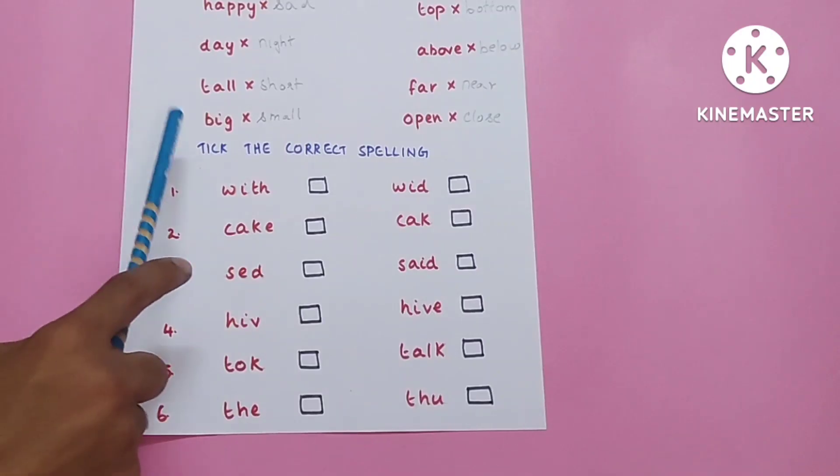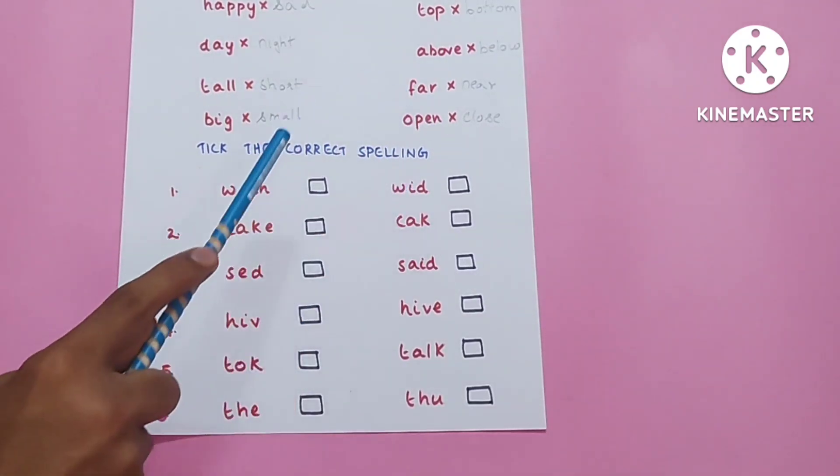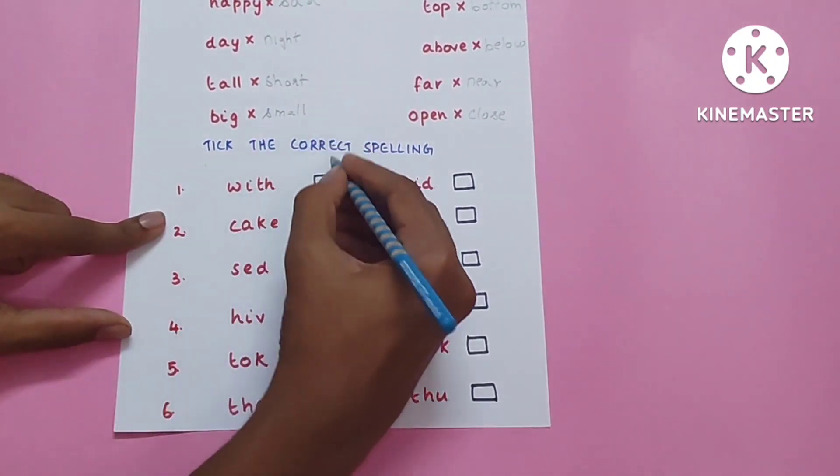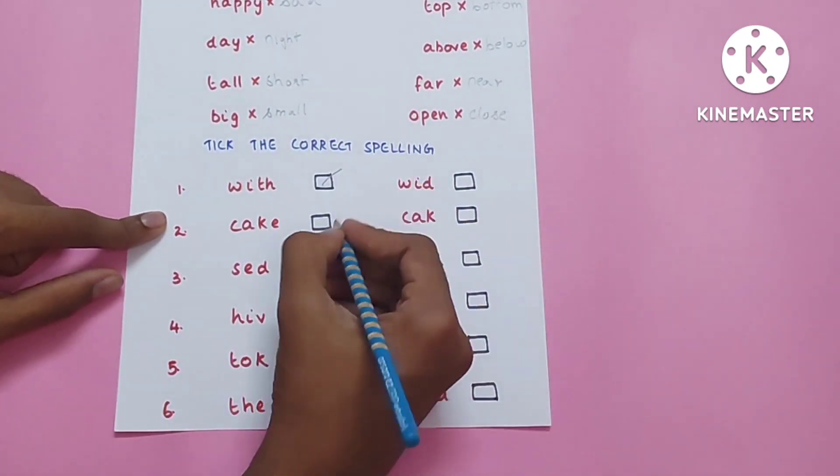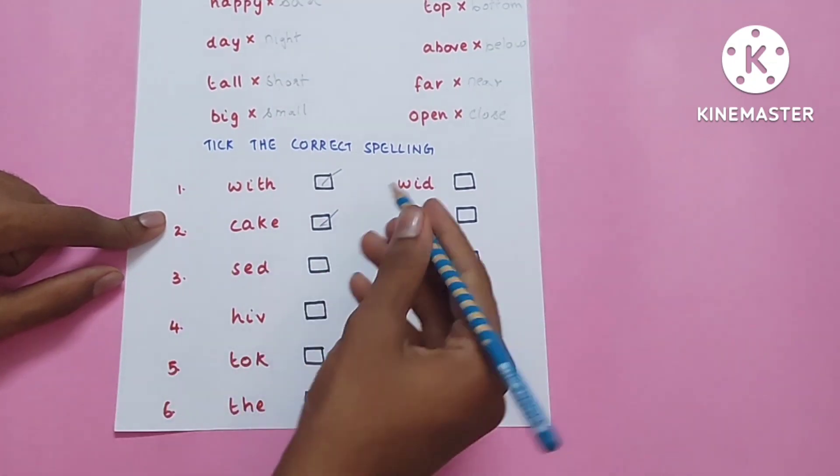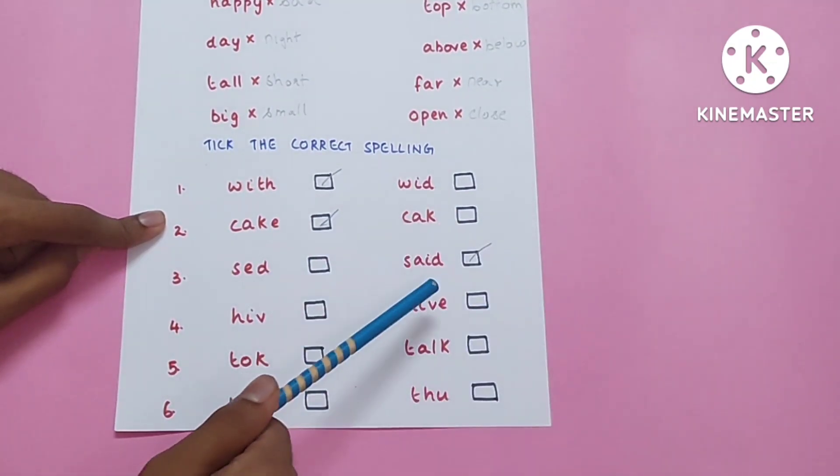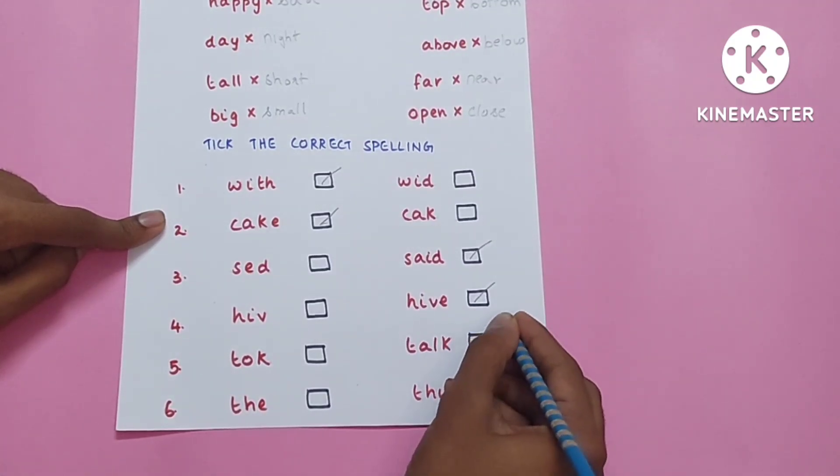Tick the correct spelling: wide, cake, said, high, talk, the.